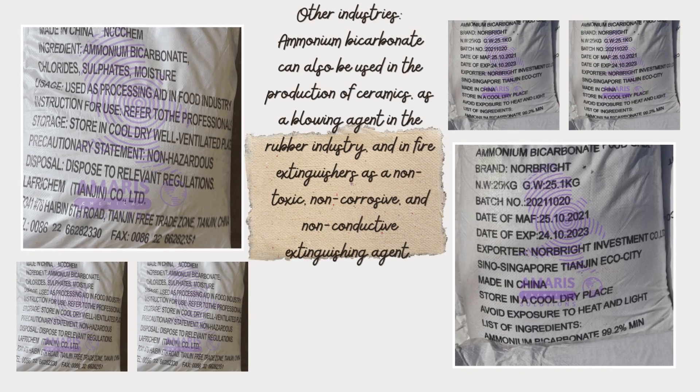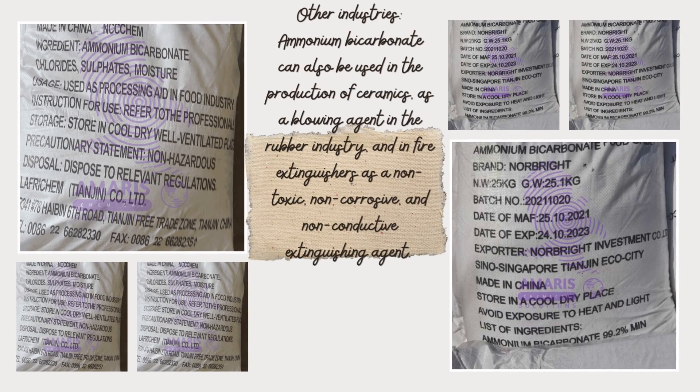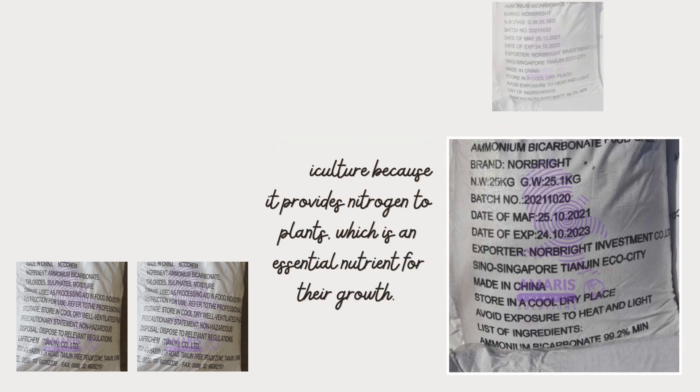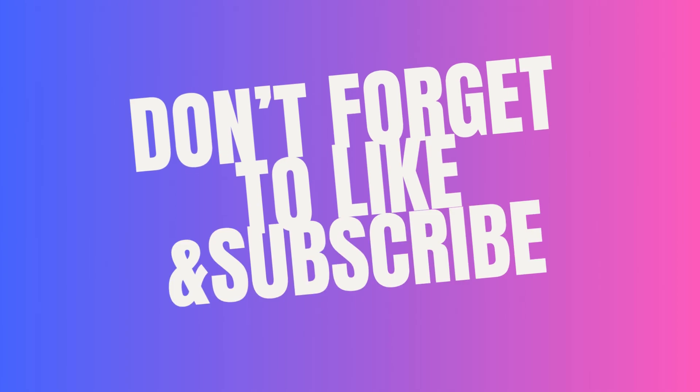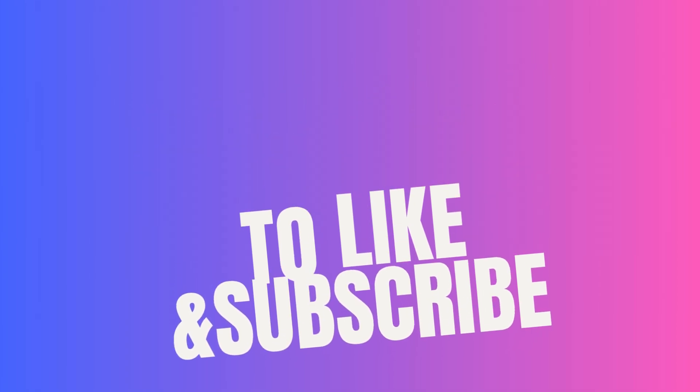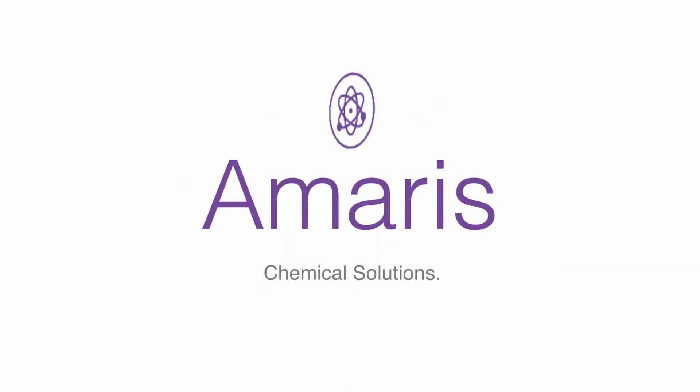In the cleaning industry, ammonium bicarbonate is sometimes used as a cleaning agent for metals such as brass and copper, due to its ability to remove tarnish and corrosion. It can also be used in the production of ceramics, as a blowing agent in the rubber industry, and in fire extinguishers as a non-toxic, non-corrosive, and non-conductive extinguishing agent.